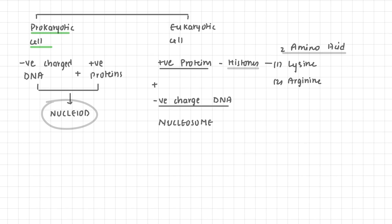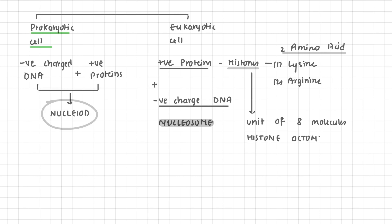In eukaryotic cells, the structure is called a nucleosome. Histone proteins are very rich in the basic amino acids lysine and arginine, which carry positive charge. A unit of 8 molecules of histone is called a histone octamer. The nucleosome consists of DNA wrapped around this histone octamer.